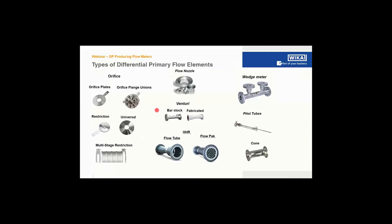There is a wide group of DP-producing flow meters. Today we focus on the orifice plate, but there are also flow nozzles with curved inlet sections, venturis, and HHR flow pack — the higher performance meters. There are also wedge meters for high viscosity, pitot tubes, and V-cones. We'll briefly touch on those as well.